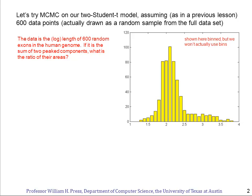In the human genome there are many tens of thousands of exons. But here we're going to assume that for one reason or another we have only a small data sample — only 600 random exons to look at. They're plotted here as a histogram, but in fact we're given the actual lengths of each exon.